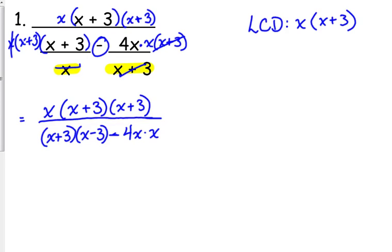We are not allowed to cancel anything at this point because of that negative in the denominator. So, our only choice is to multiply out. We have to FOIL x squared, or excuse me, x plus 3 times x plus 3, so it's x squared plus 6x plus 9.